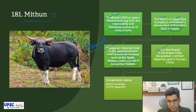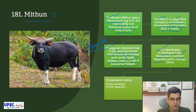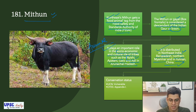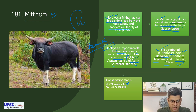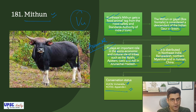It is distributed in northeast India, Bangladesh, northern Myanmar and Yunnan, China. Conservation status: IUCN Red List — Vulnerable, and CITES Appendix 1.